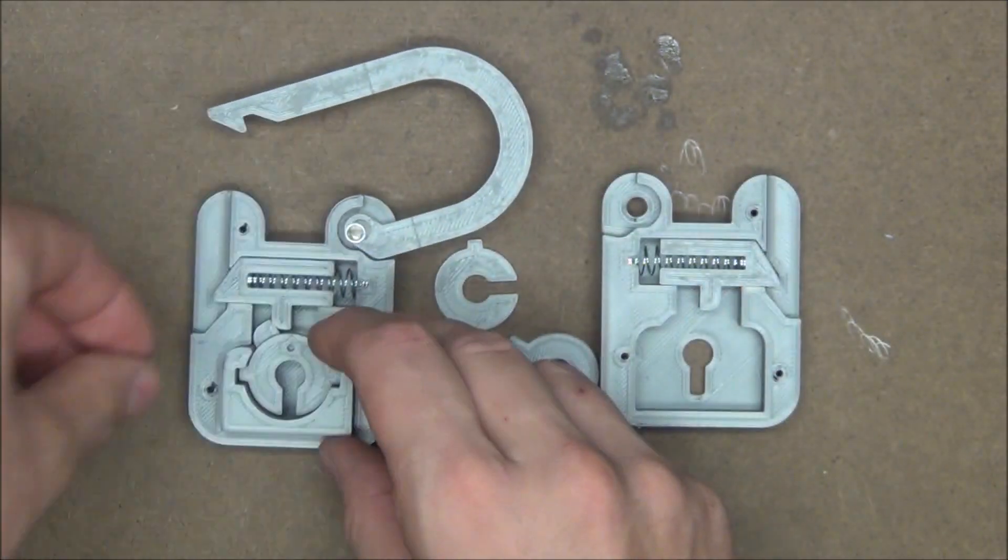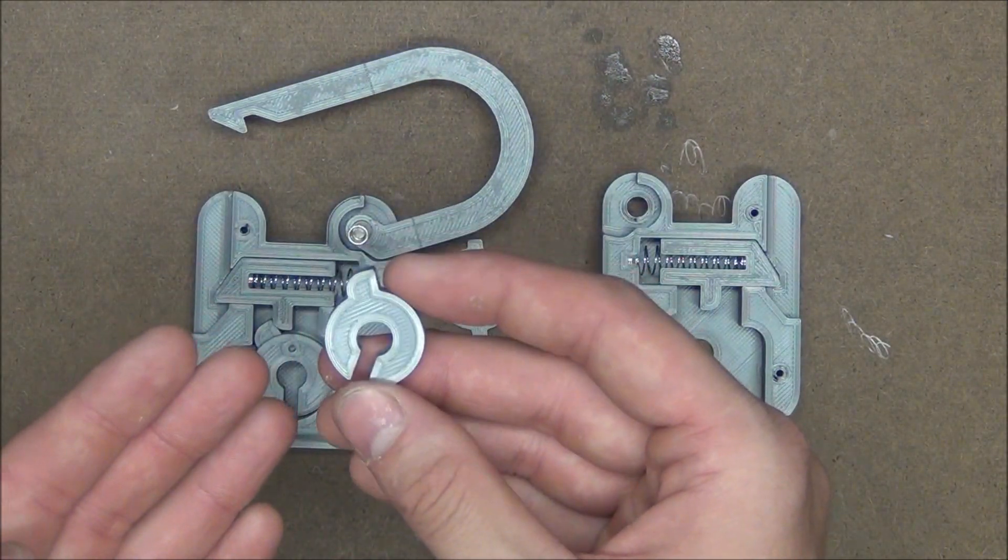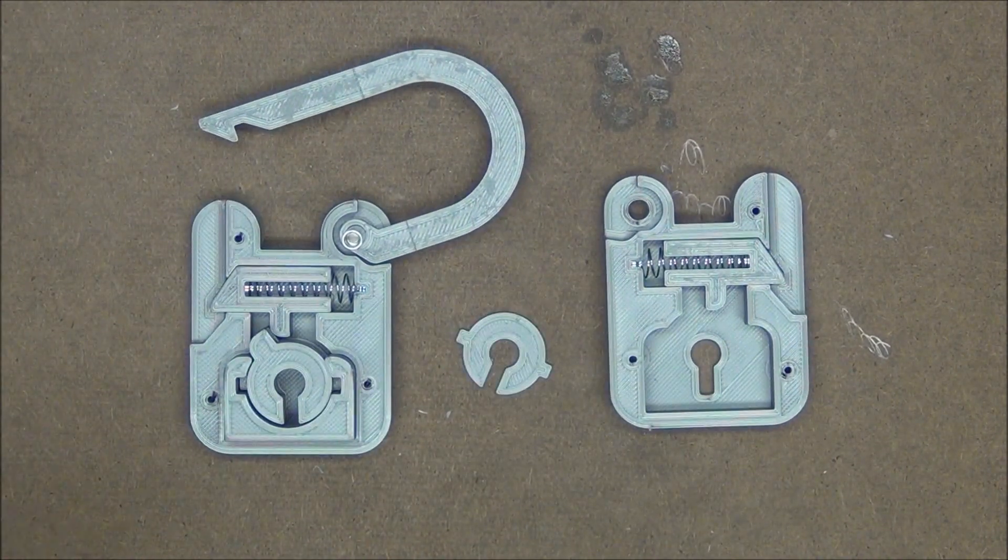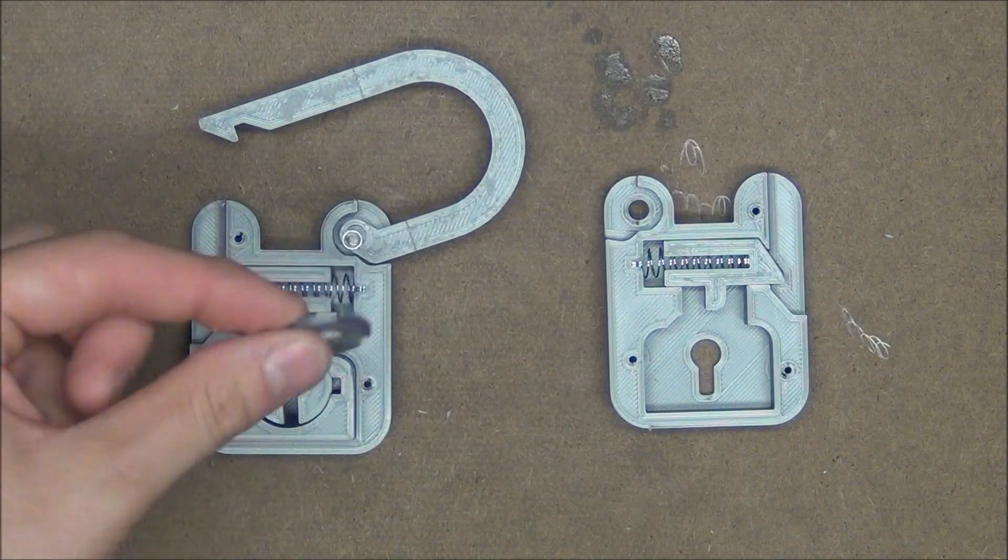Next we have another spacer that does lock in place. You can tell this is the middle one because I designed a little hole in the top of it. Another spacer that pushes against the bolt, only this one pushes against the second bolt on the other half. And lastly, another spacer that locks in place.